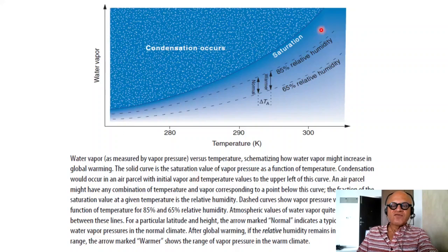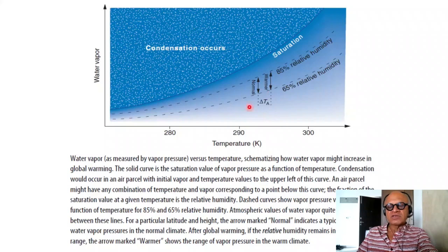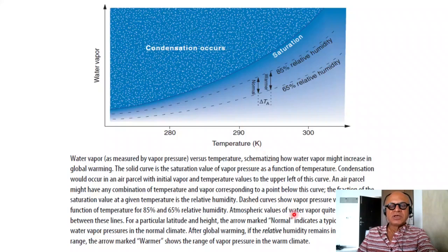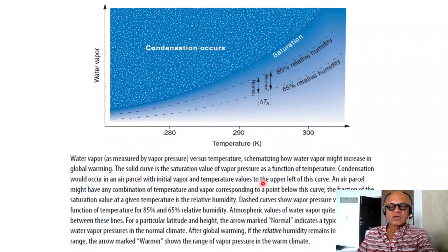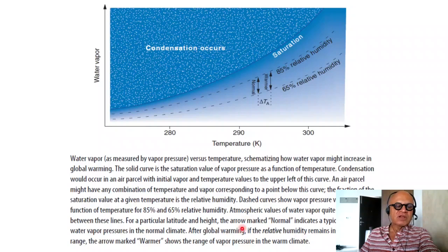The solid curve is the saturation value of vapor pressure as a function of temperature — condensation would occur in an air parcel with initial vapor and temperature values on this side. An air parcel might have any combination of temperature and vapor pressure corresponding to a point below this curve, because typically the atmosphere never really reaches saturation; when it does, it rains out and dries up again. The fraction of the saturation value at a given temperature is the relative humidity. Dashed curves show vapor pressure values for 85% and 65% relative humidity, and as temperature increases you still have an exponential shape.